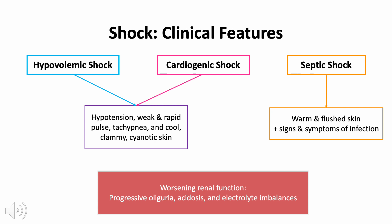Clinical manifestations of shock depend on the precipitating insult. In hypovolemic and cardiogenic shock, the patient may experience hypotension, weak and rapid pulse, tachypnea, and cool, clammy, cyanotic skin. In septic shock, the patient may have warm, flushed skin with signs and symptoms of infection. Prognosis varies with origin and duration: more than 90% of young healthy patients with hypovolemic shock survive with appropriate management, but those with septic or cardiogenic shock have substantially poorer outcomes. Identifying the precipitating insult is key to management.